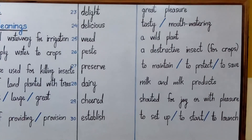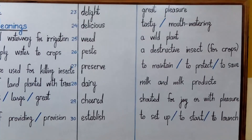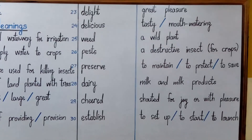Number twenty-eight is 'dairy'. All the products made of milk are called dairy, and in fact eggs — which are not made of milk — are also called dairy. This is why a milk shop is also called a dairy shop, where you find milk, milk products, or eggs. Any shop that sells such products is called a dairy.